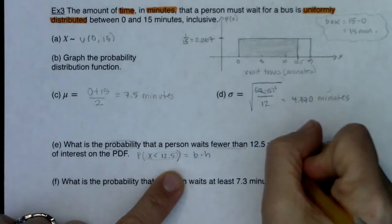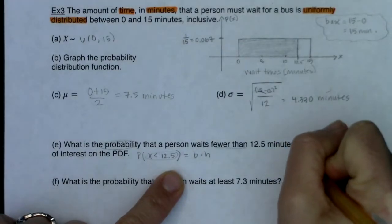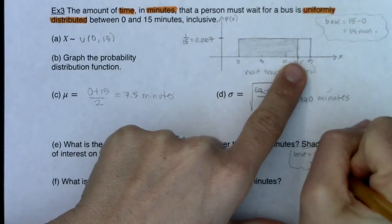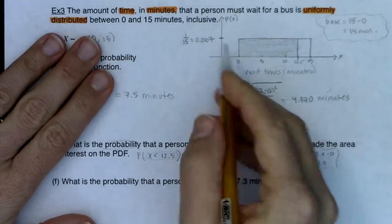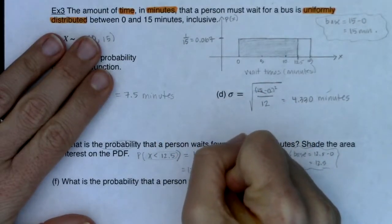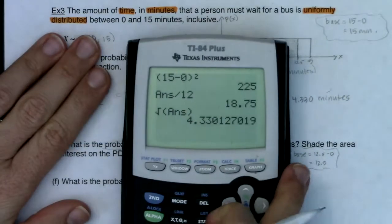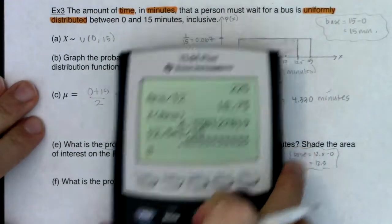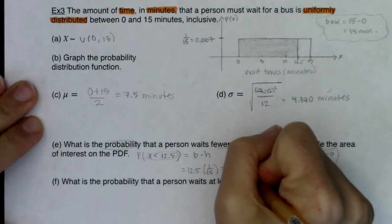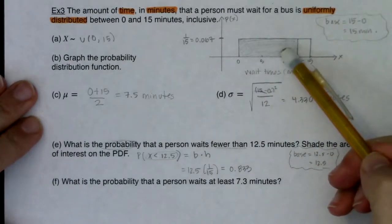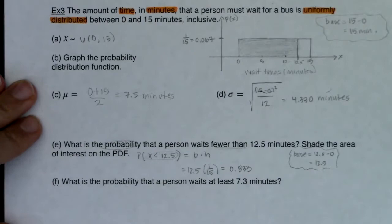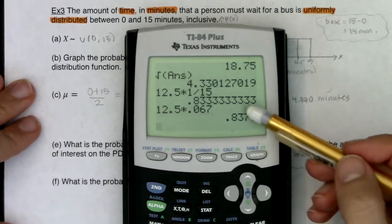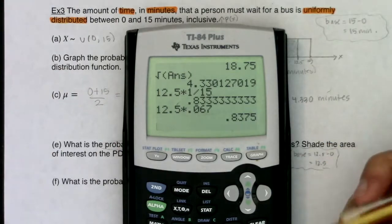Base times height: the base is high minus low, so 12.5 minus 0 — base is 12.5. Height is the uniform 1/15. So we calculate 12.5 times 1/15, which is about 0.833, or 83%. That matches my visual estimate of 75–80%. Note: if you used the decimal 0.067, you'd get about 84% — still very close.